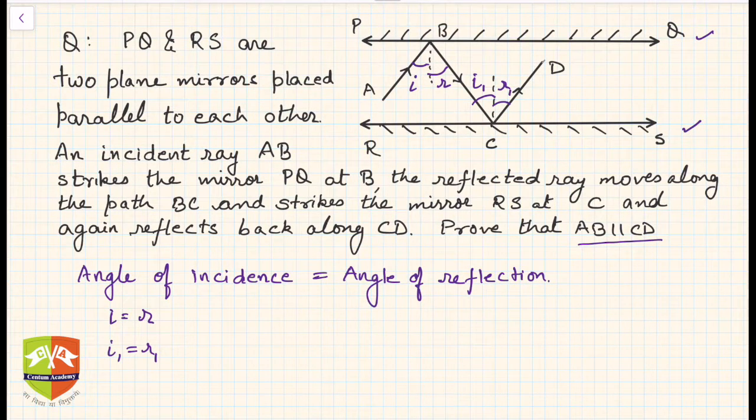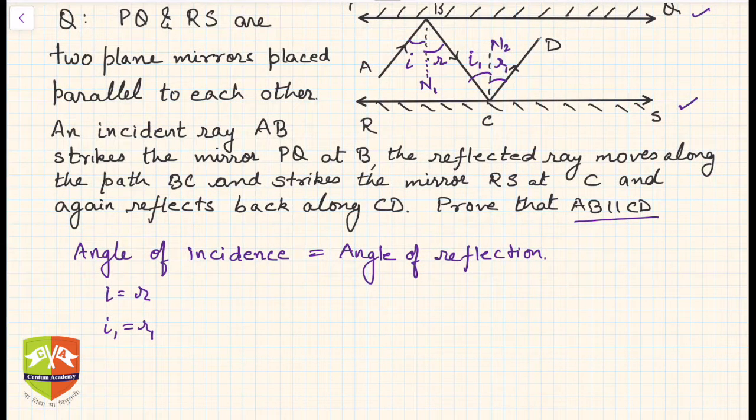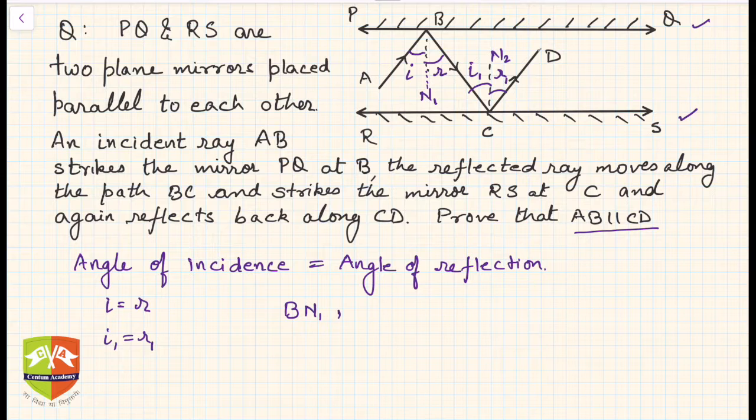If you see, these two lines are perpendicular. This is nothing but the normal. Angle of incidence is equal to angle of reflection and we know the nomenclature. This is BN1 and this is CN2. So BN1 is normal to PQ.